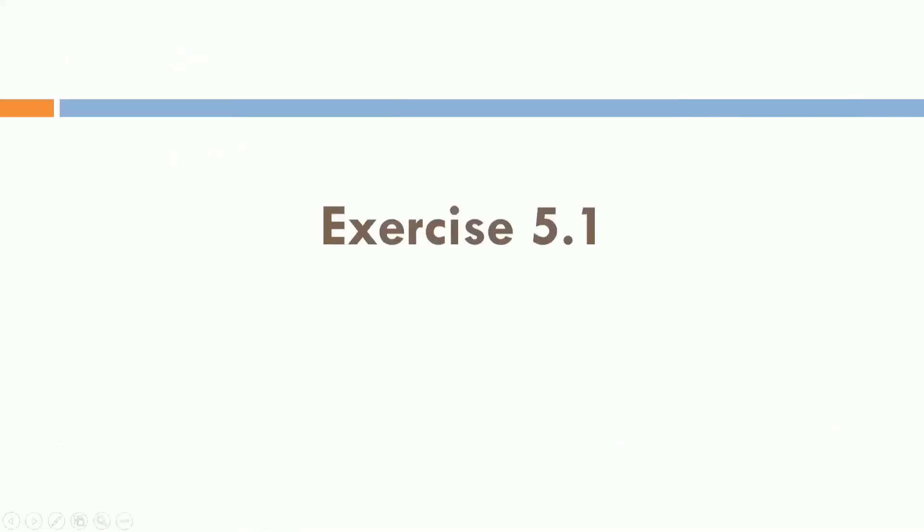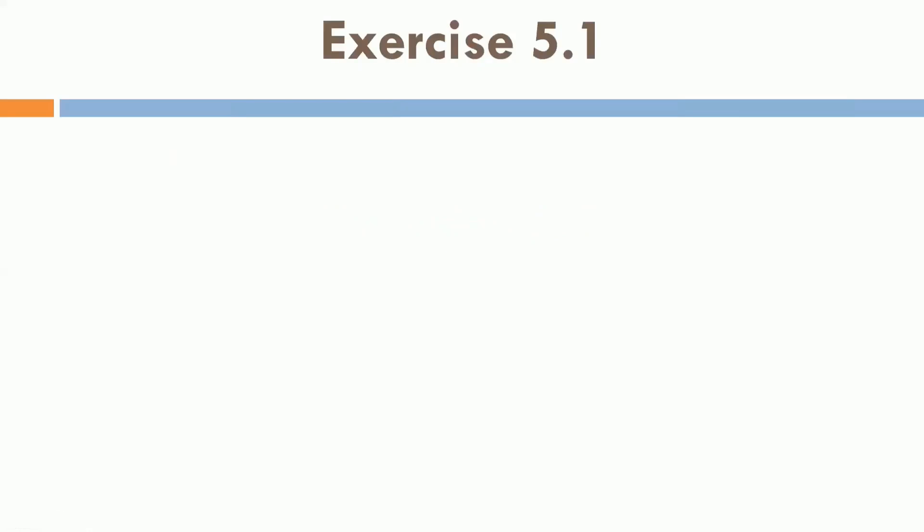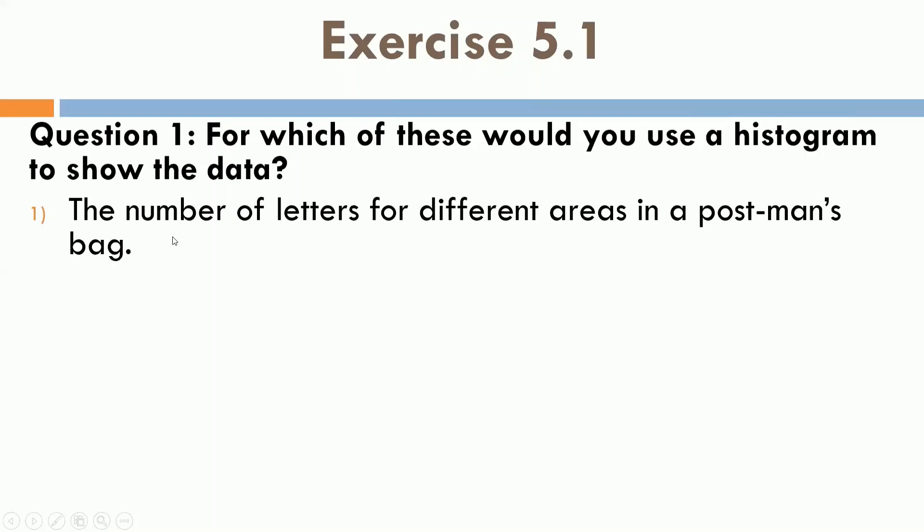Next is, exercise 5.1. Question number 1. For which of these, would you use a histogram to show the data? First one is, number of letters for different areas in a postman's bag. So, here, there will be name of areas and number of letters. So, as we have seen, in the difference of bar graph and histogram, for this one, we can put the graph in form of bar graph.